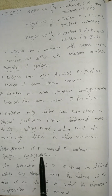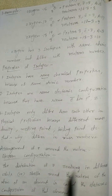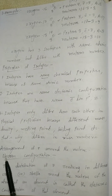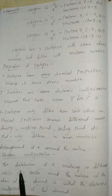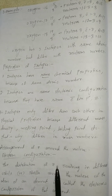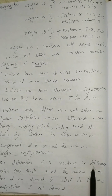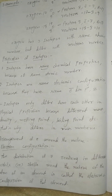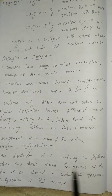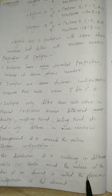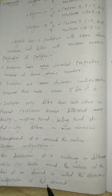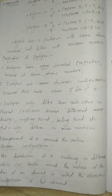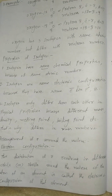The arrangement of electrons around the nucleus is called electron configuration. The distribution of electrons revolving in different orbits or shells around the nucleus of the atom of an element is called the electronic configuration of the element. Thank you everyone, please subscribe to my channel.